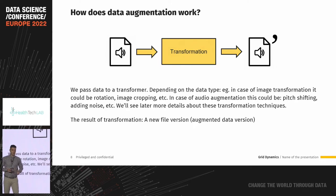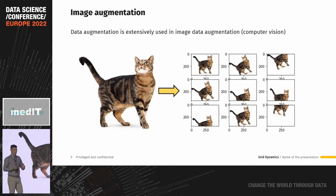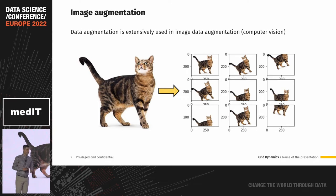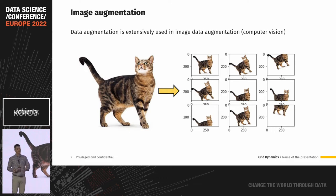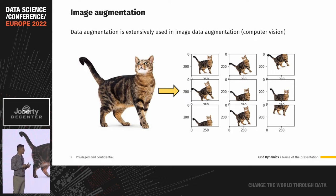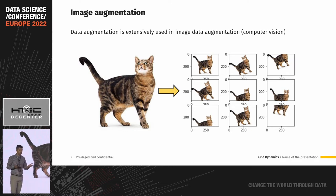Data augmentation is widely used in computer vision. With images, we can apply different kinds of transformations like image rotation, cropping, and shifting to the right, left, up, or down, to generate more image samples.